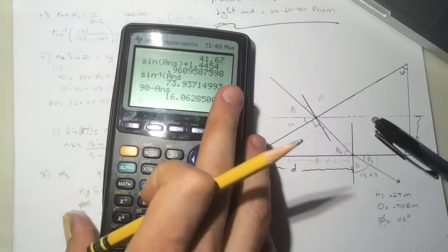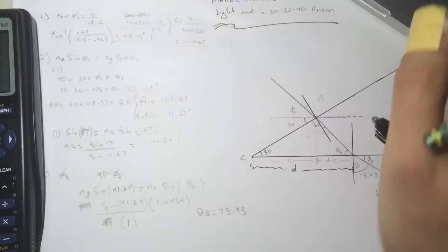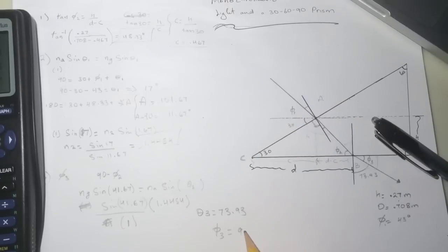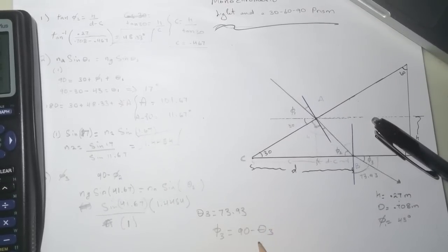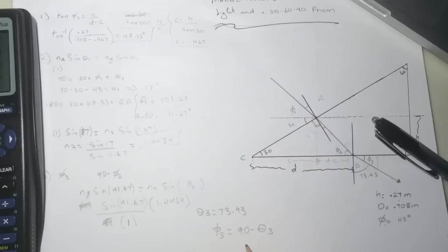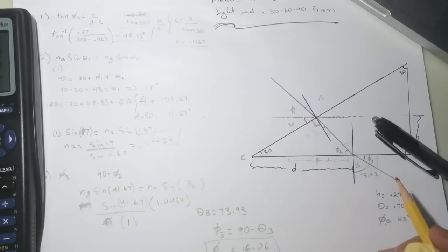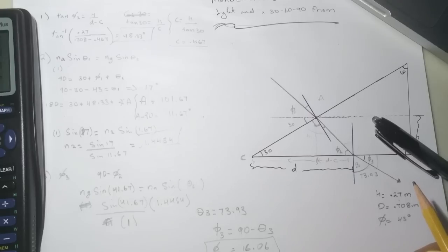But theta3 is measured from the perpendicular; we actually want the angle from the surface, so 90 minus 73.93 gives phi3 equals 16.04 degrees. I'll finish the rest of the problem in another video because it's going to take a long time to explain. Good luck guys, see you in the next video!